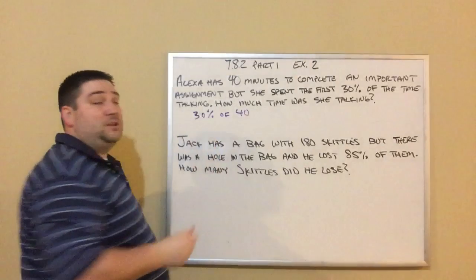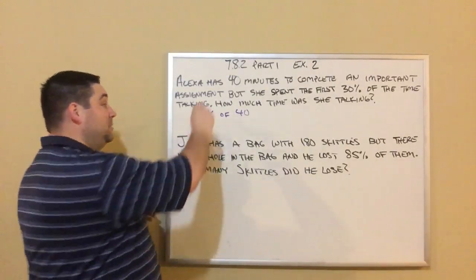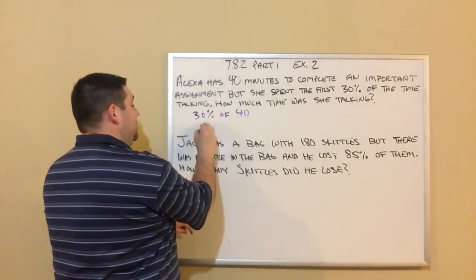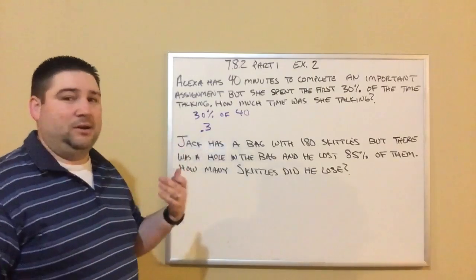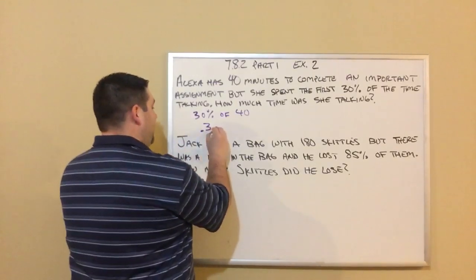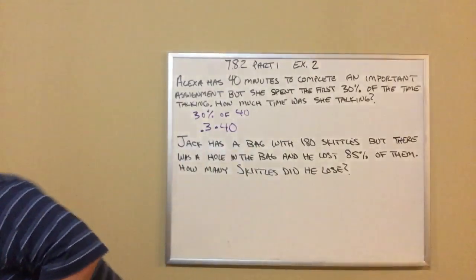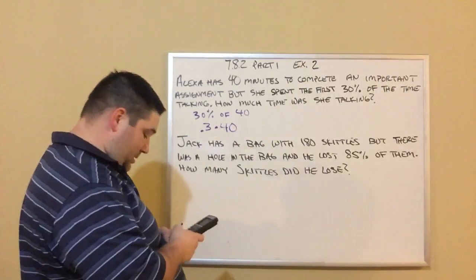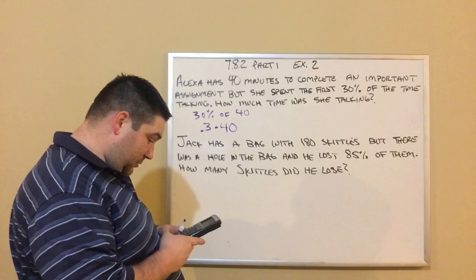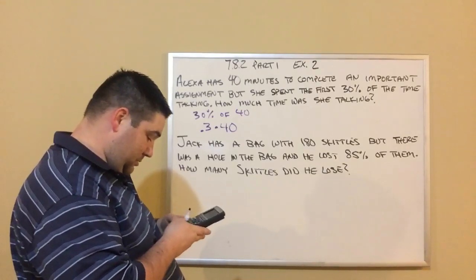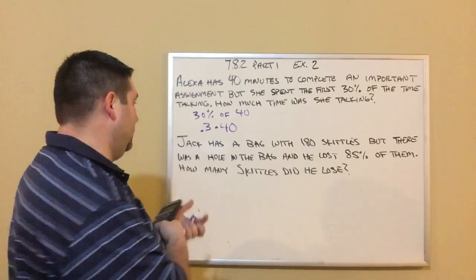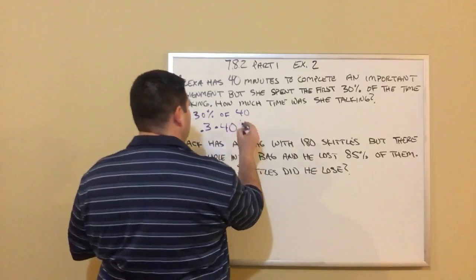And we learned that 30%, we make it into a decimal. I move my decimal two places to the left. So that would be 0.3 or 0.30, it doesn't matter. And I'm going to multiply that by 40. I do that math. I got a calculator somewhere here. 0.3 times 40 should be 12, right? It is 12.